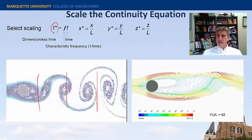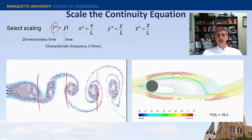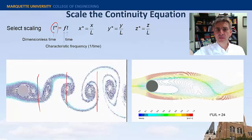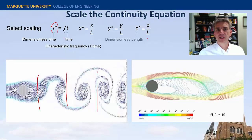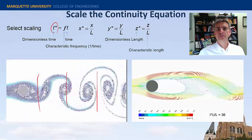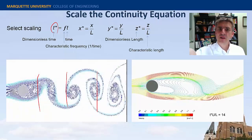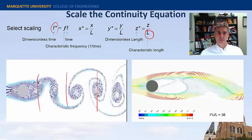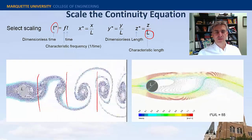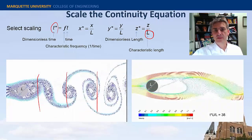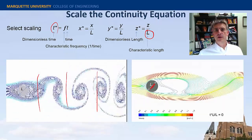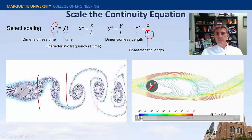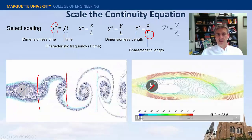The next independent variable we'll non-dimensionalize is the spatial variables x, y, z. We'll non-dimensionalize them by some characteristic length L. What would be an appropriate characteristic length for this flow field? In general, the one that jumps out is the diameter of the cylinder. So we'll scale each one of the independent variables associated with length by that.